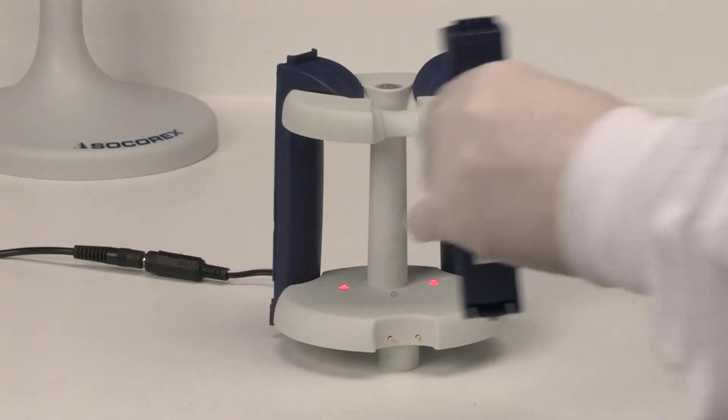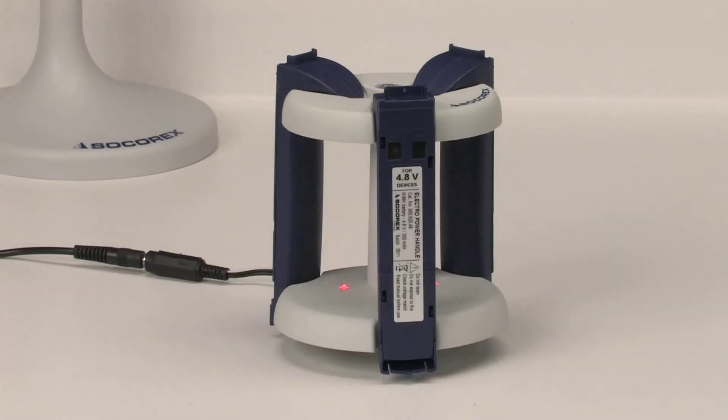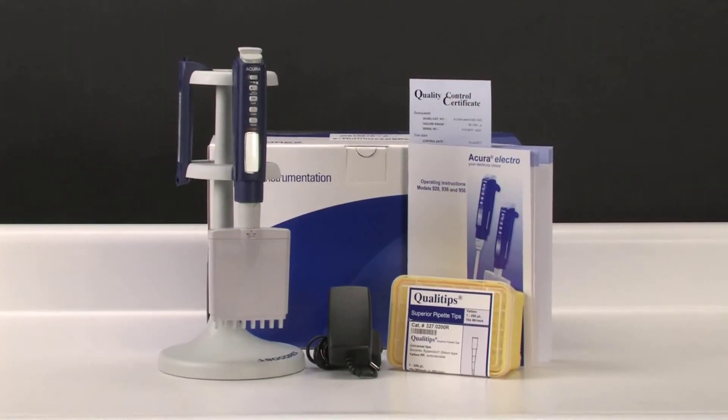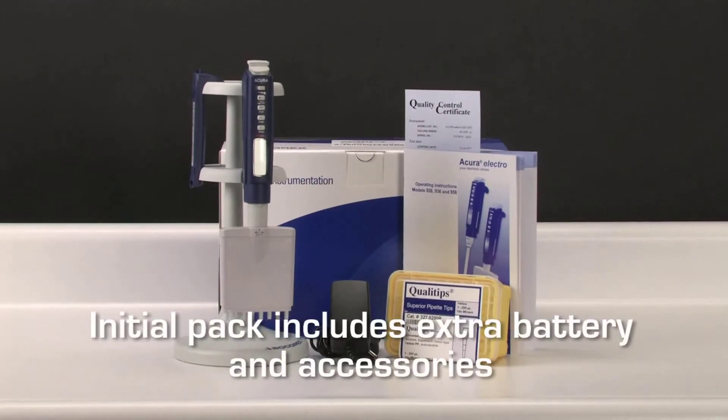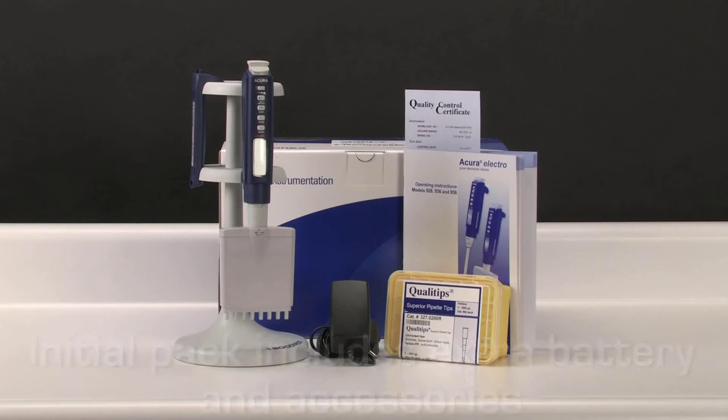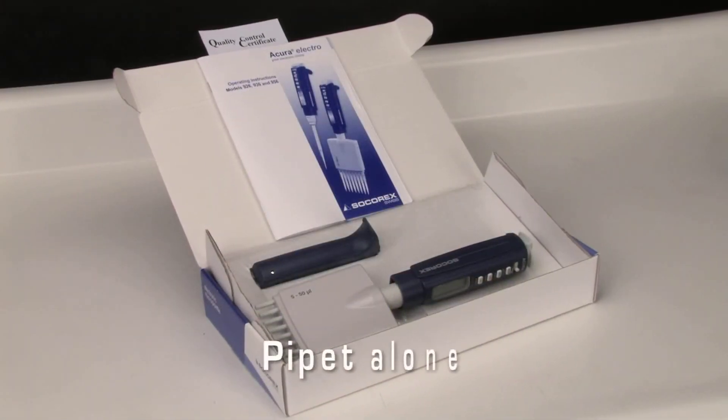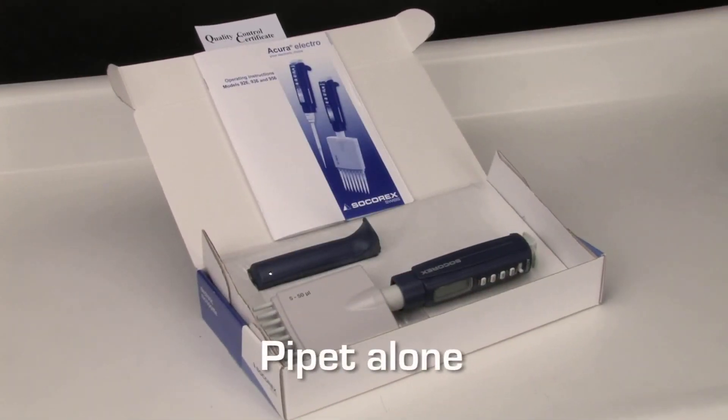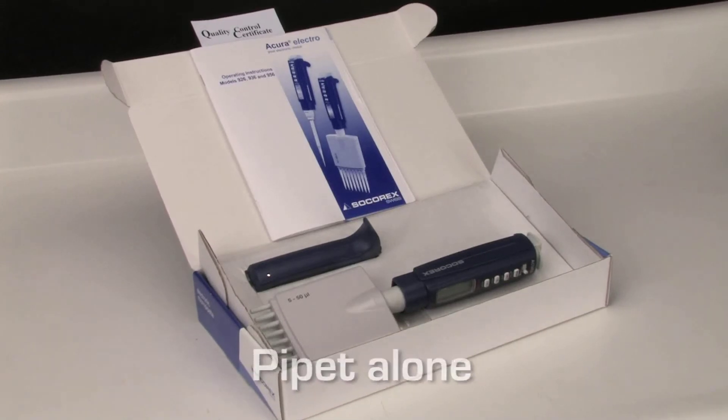The accessory battery charging rack can charge up to three battery packs simultaneously. Acura Electro is available as an initial pack, including a complete instrument and charging devices. If the charging stand is already available in the lab, additional instruments may be purchased at a lower price.